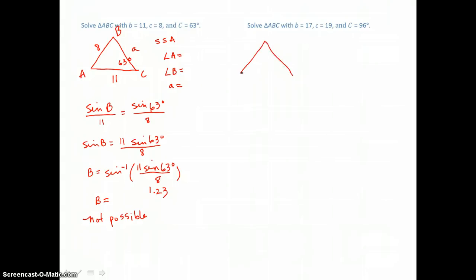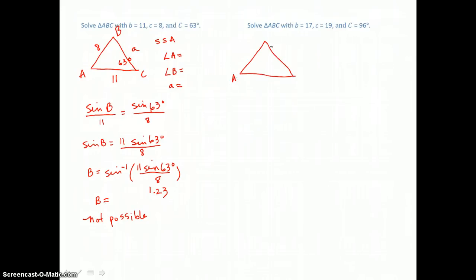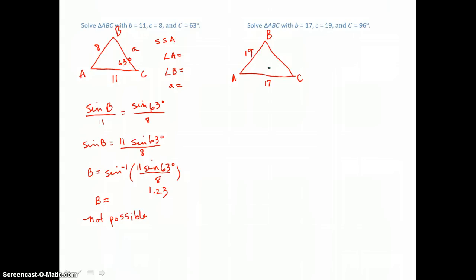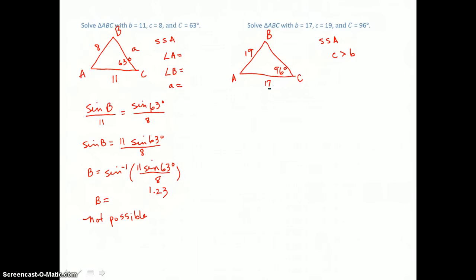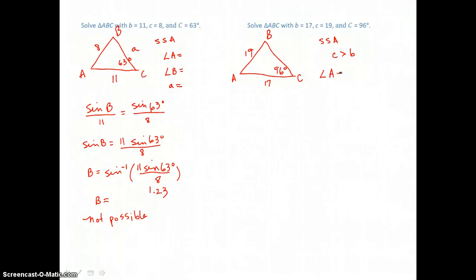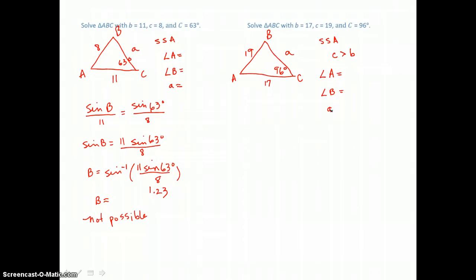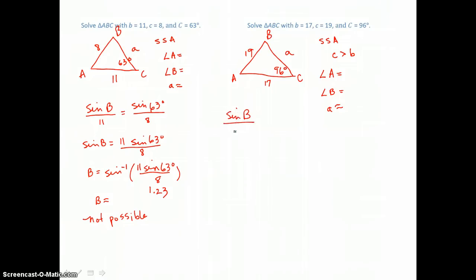Let's look at the next triangle. Triangle ABC has measures B equal to 17, C equal to 19, and angle C equal to 96 degrees. This is another side-side-angle case. Because side C is greater than side B, we're going to find one solution. If side C were less than or equal to B, there would be no solution. Since there is one solution, we need to find angle A, angle B, and side A. We start by finding angle B, because we know the side opposite it, which is 17.